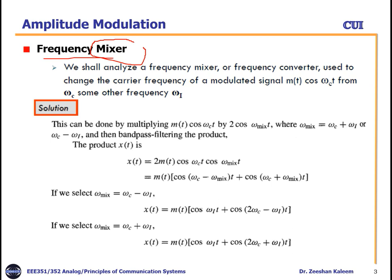Let's discuss how it shifts the spectrum of a signal. We shall analyze a frequency mixer or frequency converter used to change the carrier frequency of a modulated signal M(t)cos(ωC·t) from ωC to some other frequency ωI — the intermediate frequency. It can be any frequency, and we will achieve this frequency shifting using the frequency mixer.